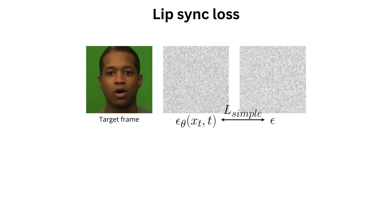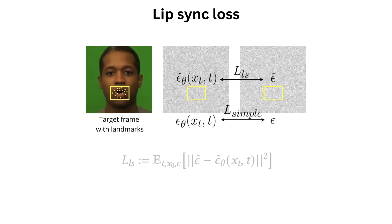To improve lip synchronization, we introduce lip sync loss. Using facial landmarks, we create a bounding box around the lips and find corresponding areas in the noise space. Similarly to the main loss function L-Simple, we define the lip sync loss as L2 distance between ground truth and predicted noises, but only in these selected regions.